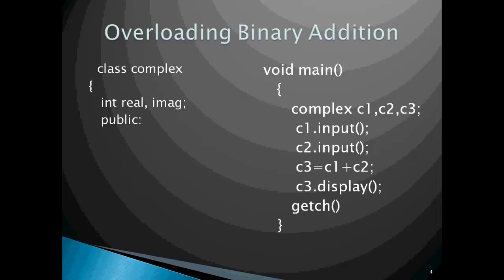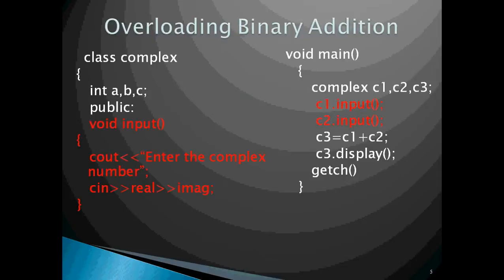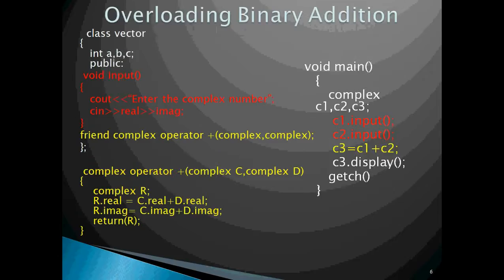Here we go with the class. Class complex has int real and imaginary as the data members. In the public section we have the input function, which takes two values from the user — one for the real part and one for the imaginary part. The plus operator is being overloaded here through a friend function. Friend functions are declared inside the class and defined outside the class.